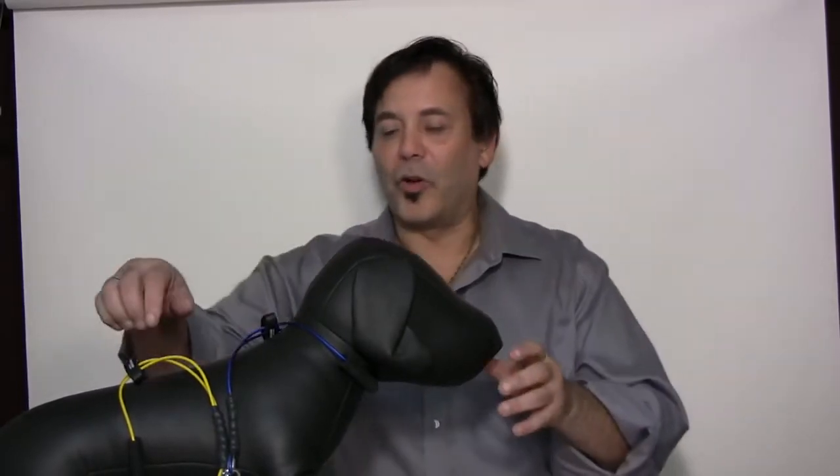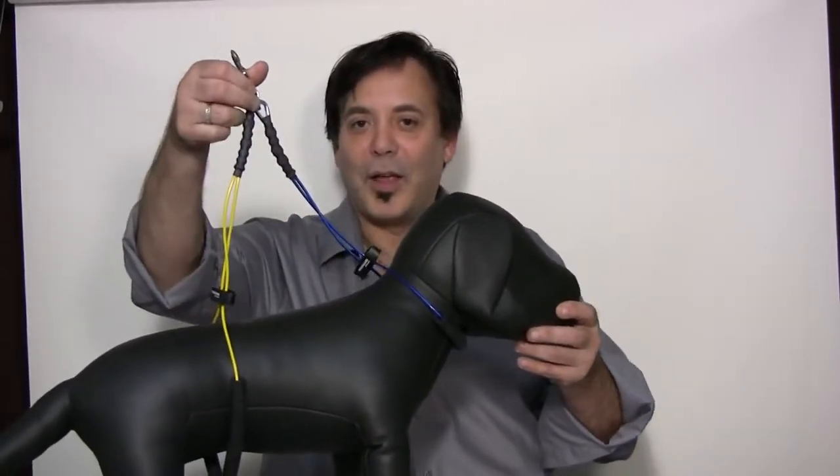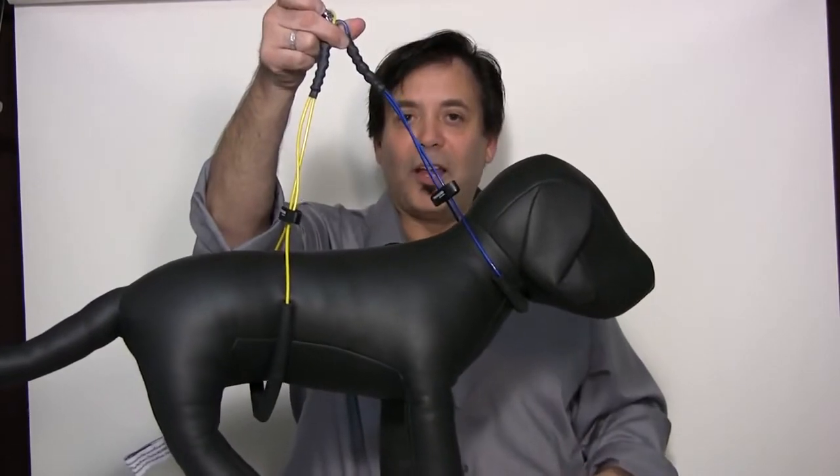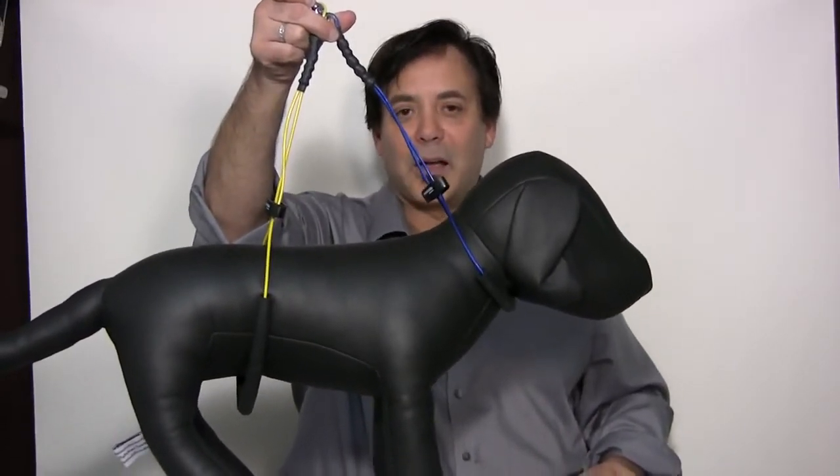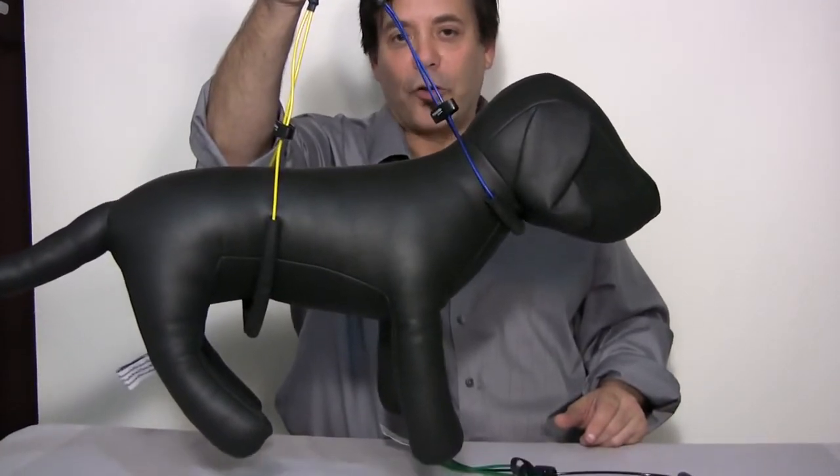So we made the No-Sit Haunch Holder and let me show you how this works. We put it on this demonstration dog and if you watch carefully, as we pick up the pet, the animal is supported easily from neck to back, off the table, very comfortably with the No-Sit Haunch Holder.